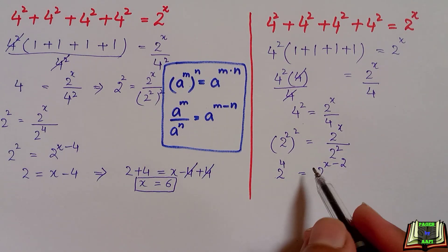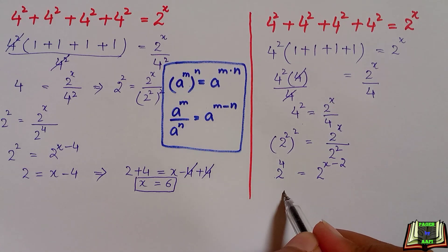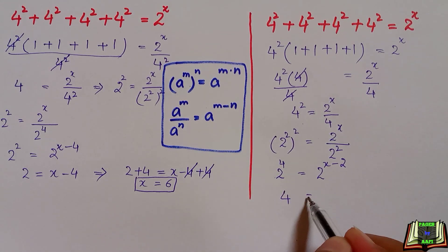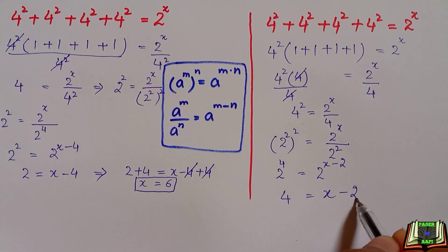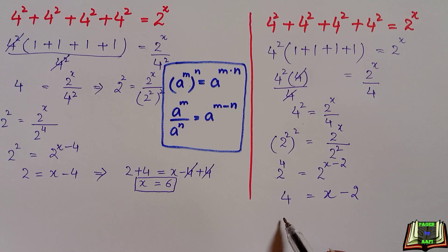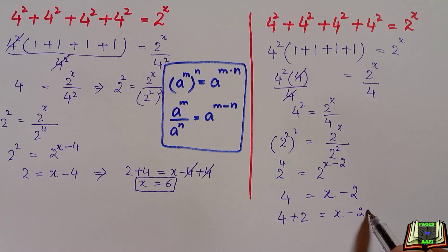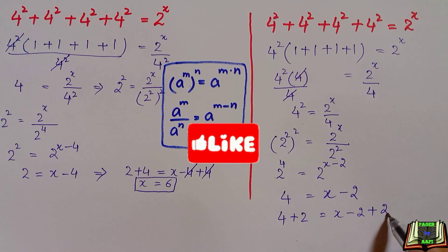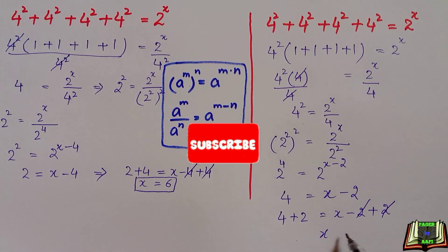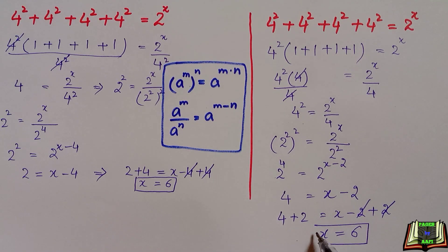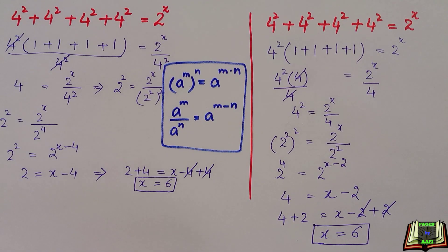Subtracting the powers according to the division law of exponents gives 2 raised to power x minus 2. Since the bases are the same and equal, they cancel, and we have 4 equal to x minus 2. Adding 2 on both sides, the 2s cancel and x equals 6 — the final answer, which is the same as the first method.